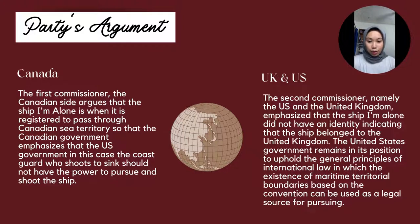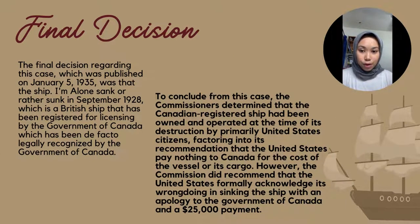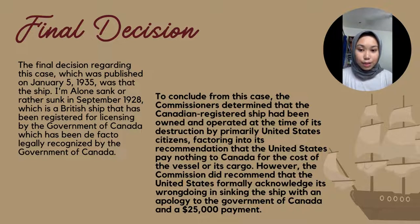Under the 1924 treaty — the Convention between the U.S. and Great Britain for the Prevention of Smuggling of Intoxicants (43 Statute 1941–1961) — the Coast Guard had the right to seize vessels suspected of smuggling alcohol into Prohibition Era U.S., but only if the offending vessel was within one hour of the coastline. The final decision, published on January 5, 1935, found that the I'm Alone was a British ship registered in Canada. The absence of crew members who were U.S. citizens became the basis for providing compensation for the sinking of the I'm Alone.